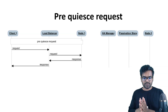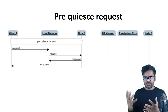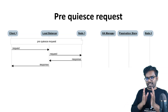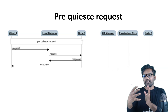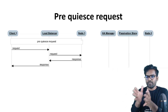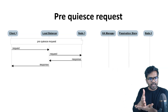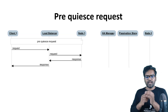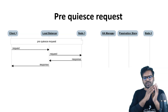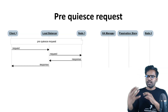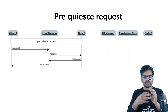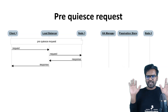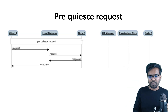First is the pre-quiesce request — so this is a normal request before quiescing, when a server is running perfectly fine. A client needs to access some web pages or do something on the server, so he makes an HTTP request hitting the load balancer URL. The load balancer sends the request to the node 1 server, the server responds, and we get the response. Those are the four arrows — a normal HTTP request with the load balancer in place.